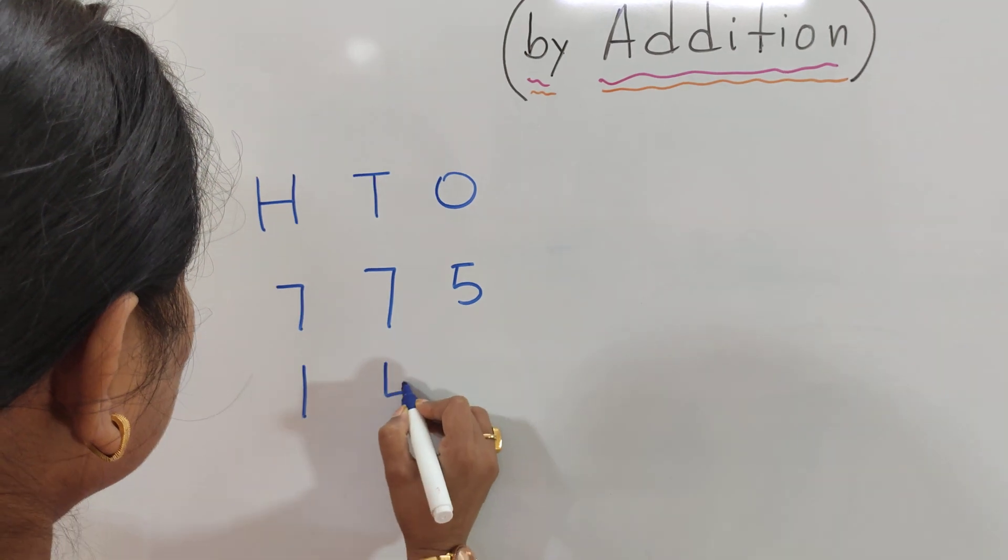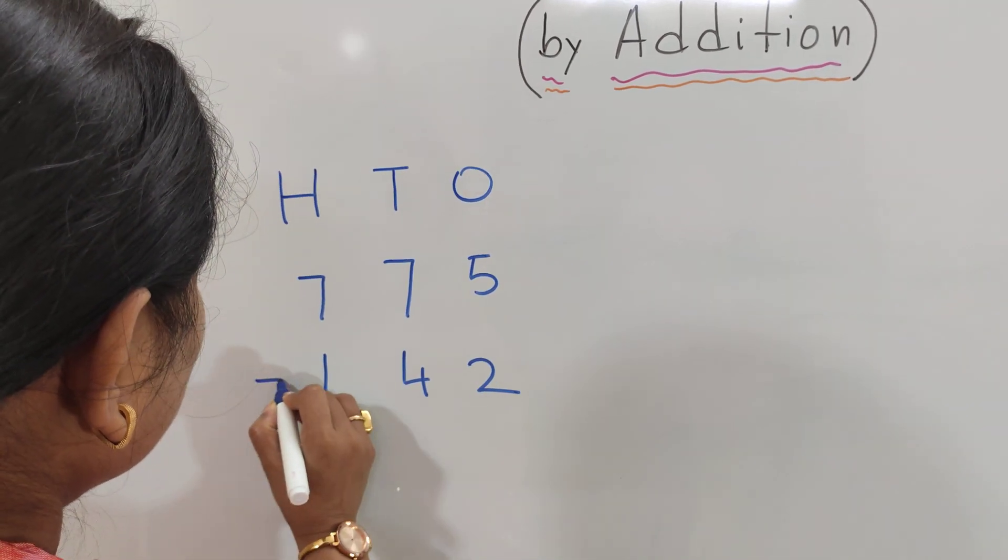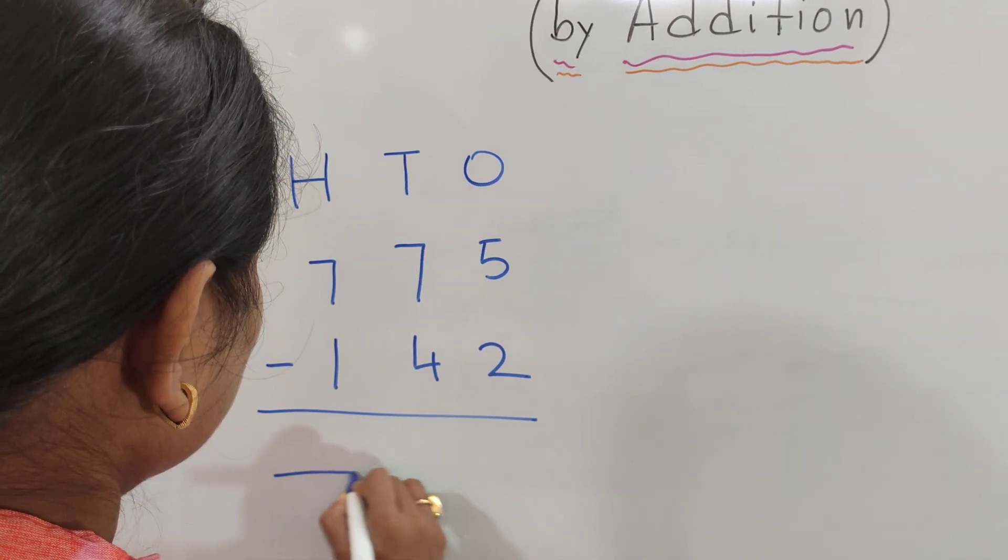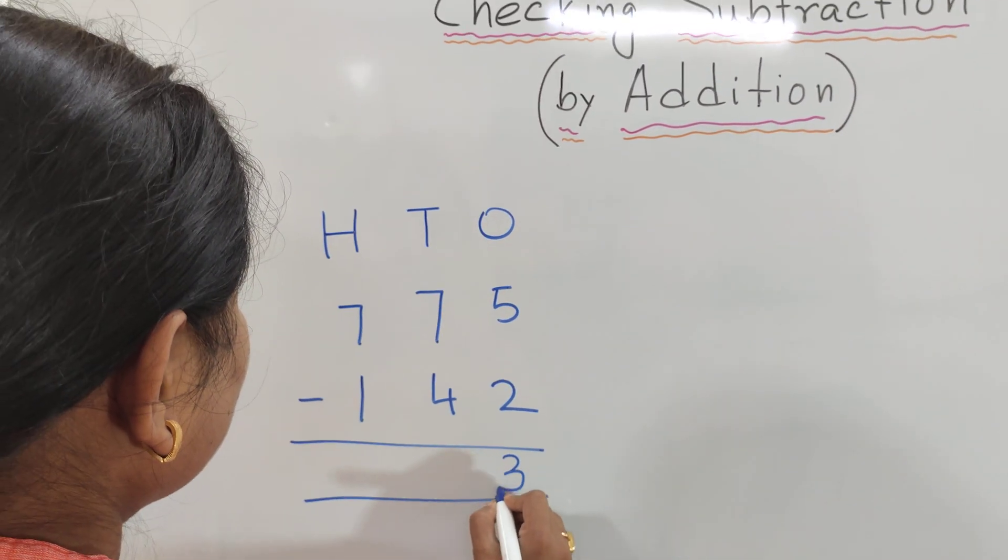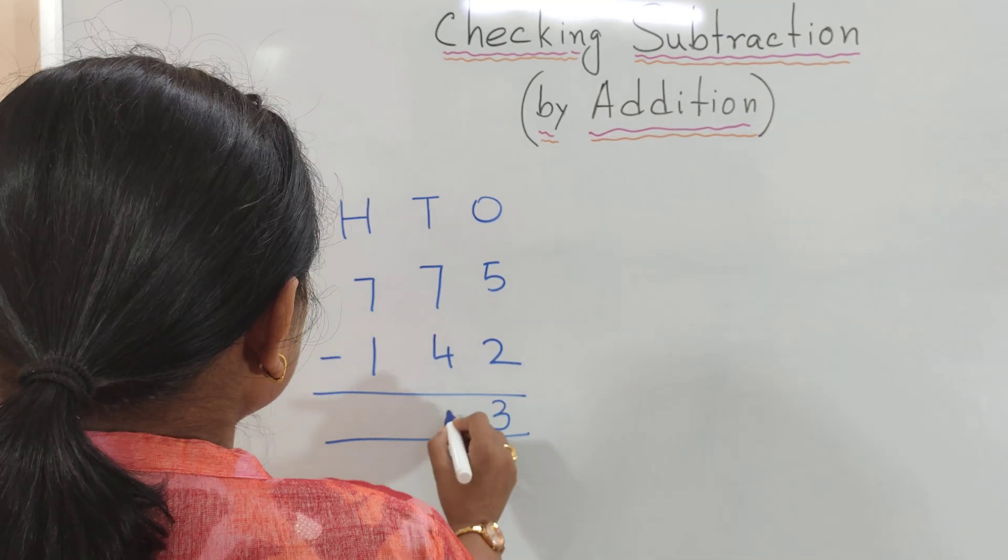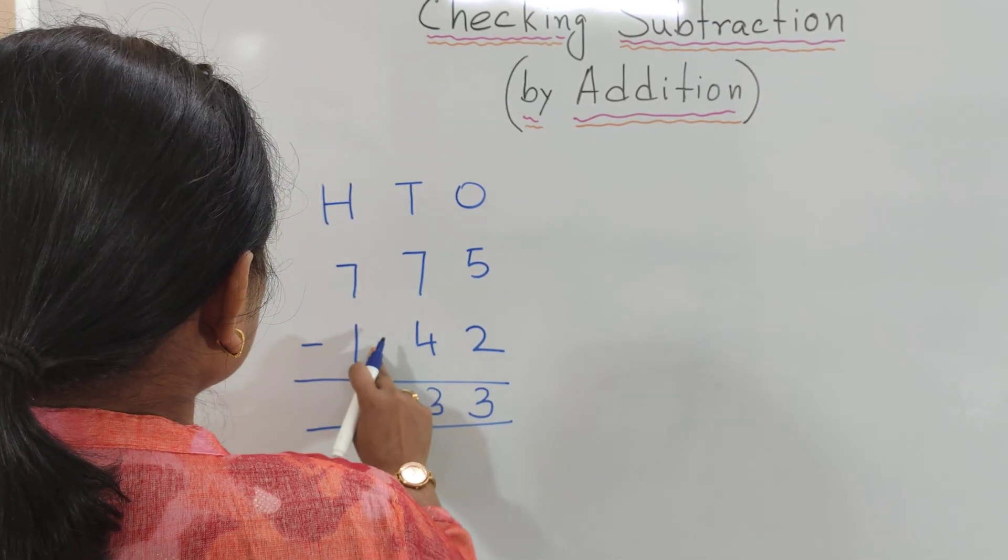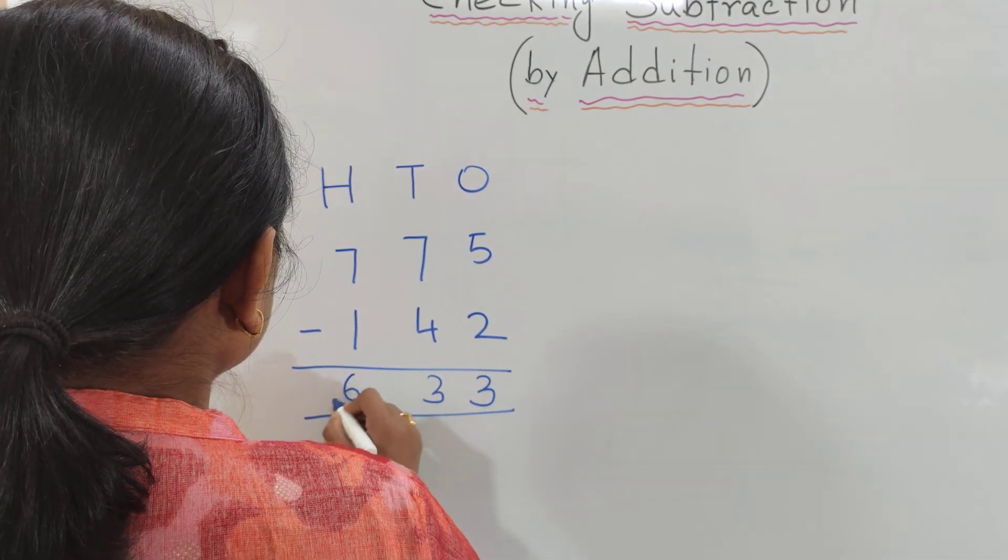775 minus 142. 5 minus 2 is 3. 7 minus 4 is 3. 7 minus 1 is 6.